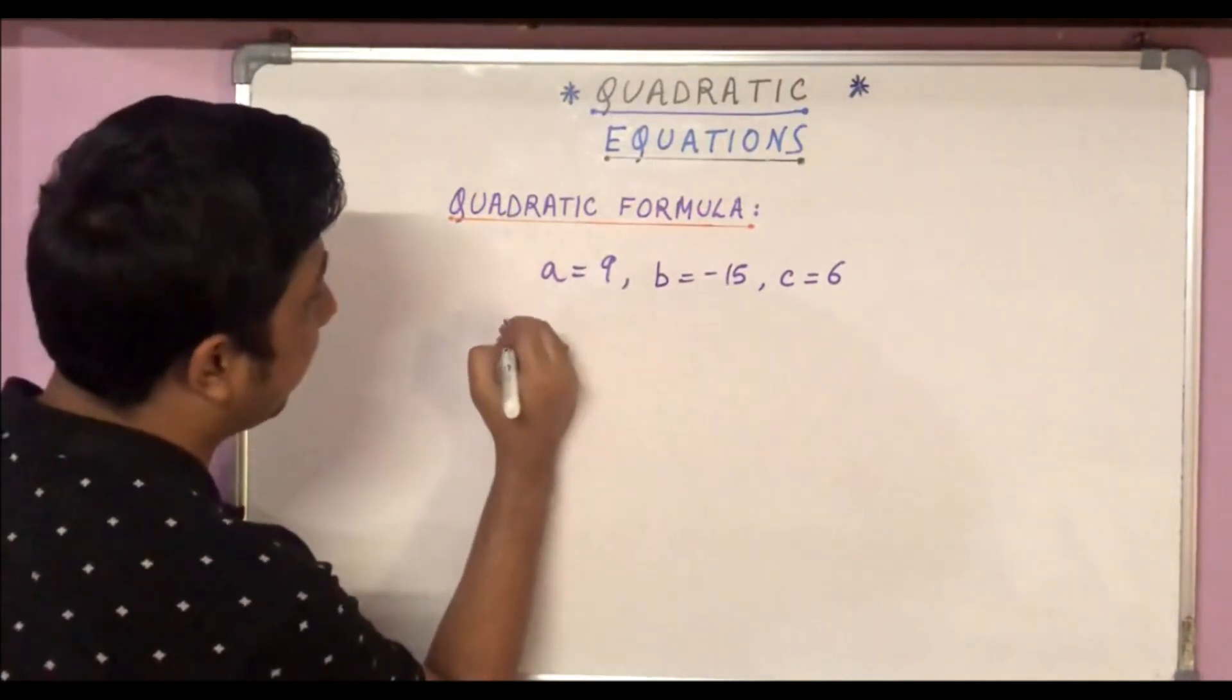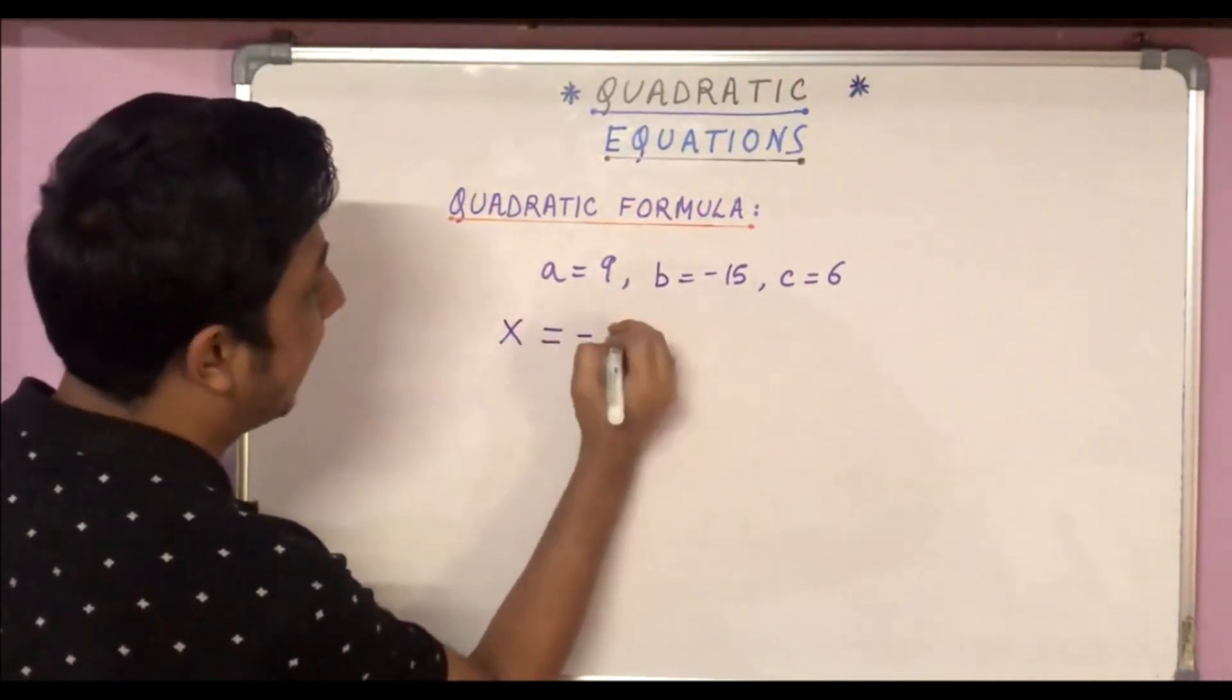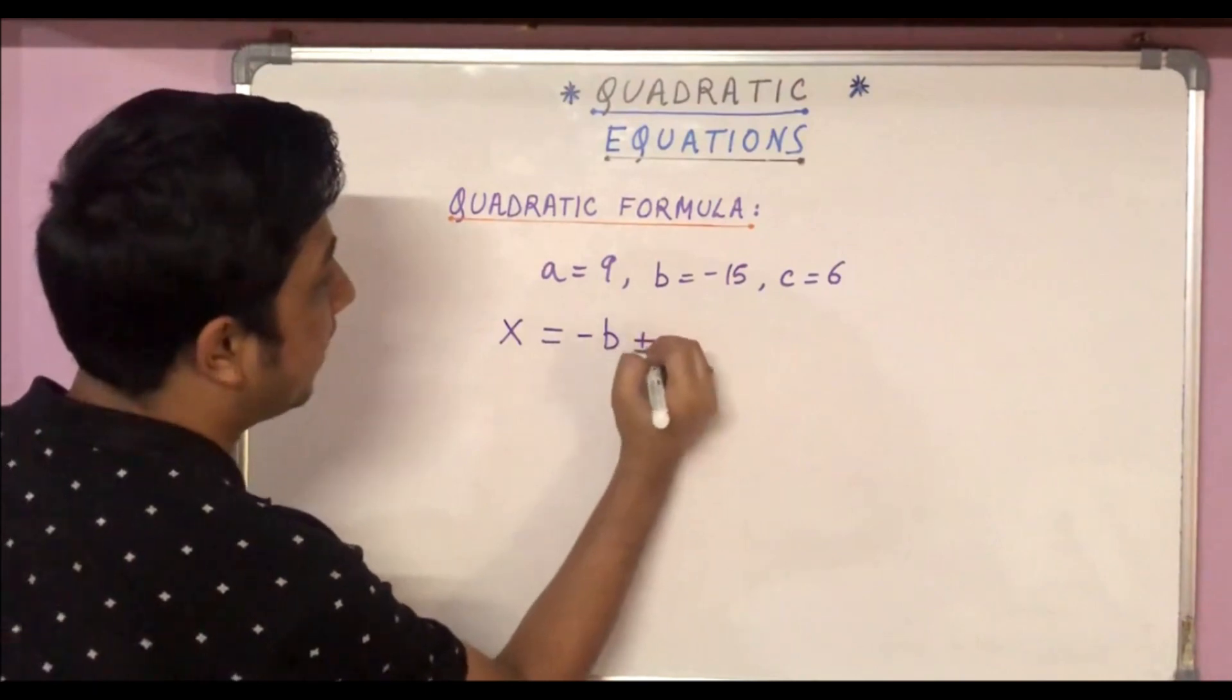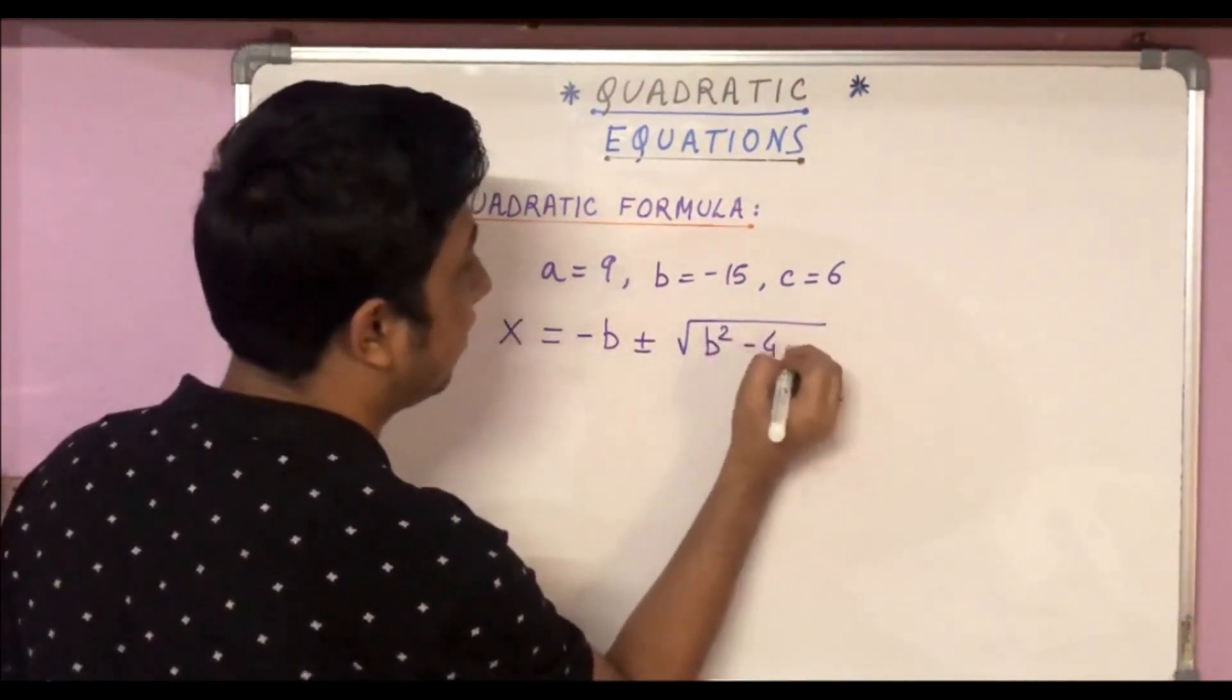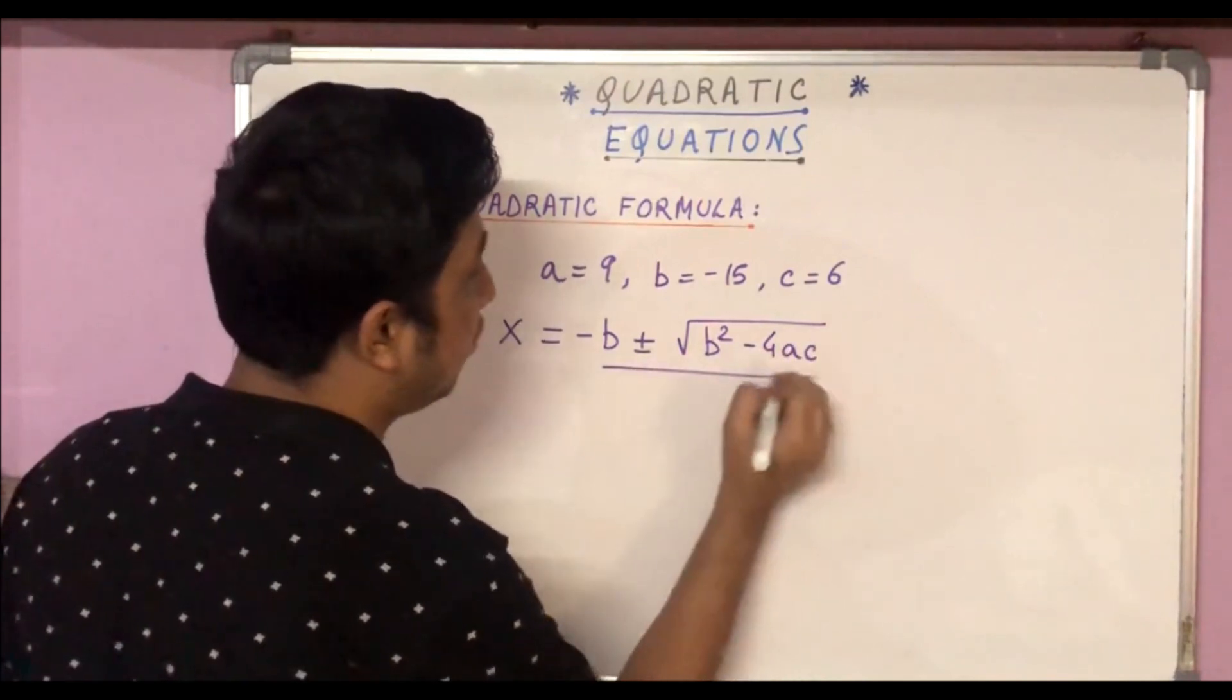The expression for the quadratic formula is x = (-b ± √(b² - 4ac)) / 2a.